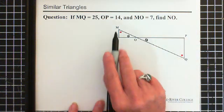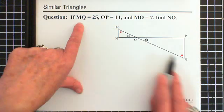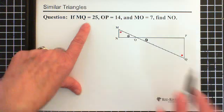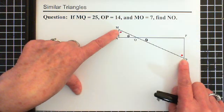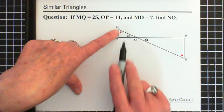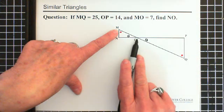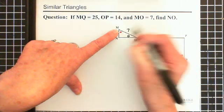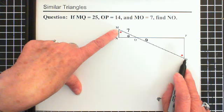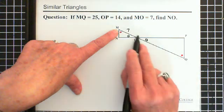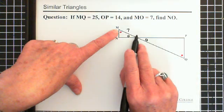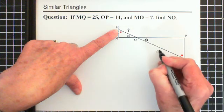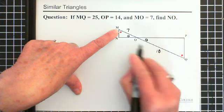So now we know that the entire distance from M to Q is 25. So this entire distance here is 25. We also know that the distance from M to O is 7. This entire distance is 25. This distance here is 7. As a result, this distance here must be 18 from O to Q.